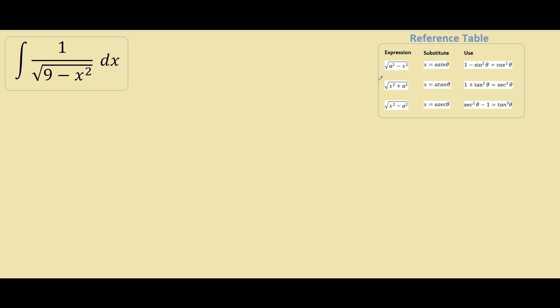It's not very obvious when you need to do it. So in this example we have 9 minus x squared. This is in the same formula as a squared minus x squared. In this example, a would be 3 because 3 squared equals 9.